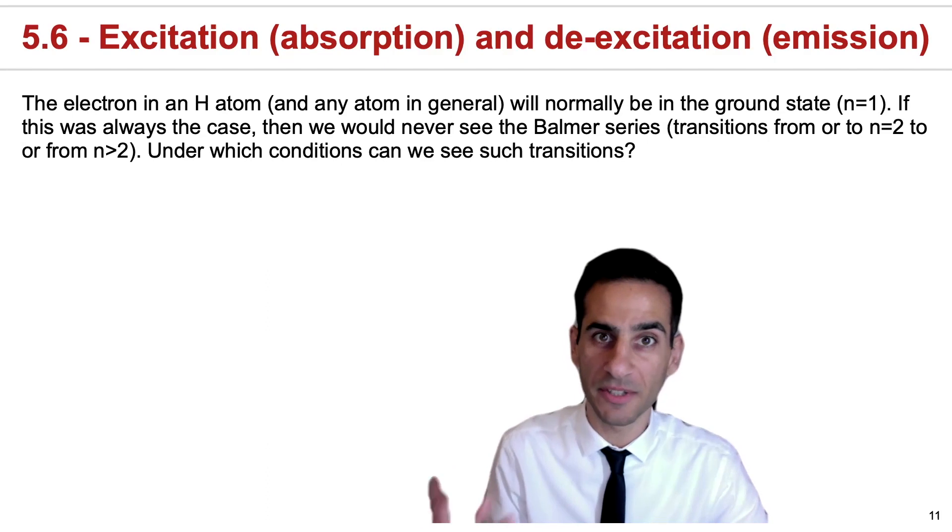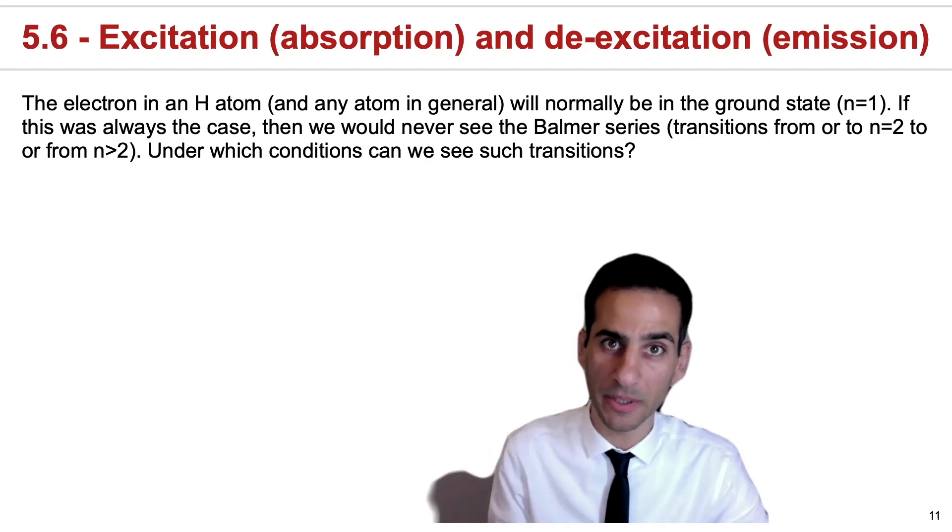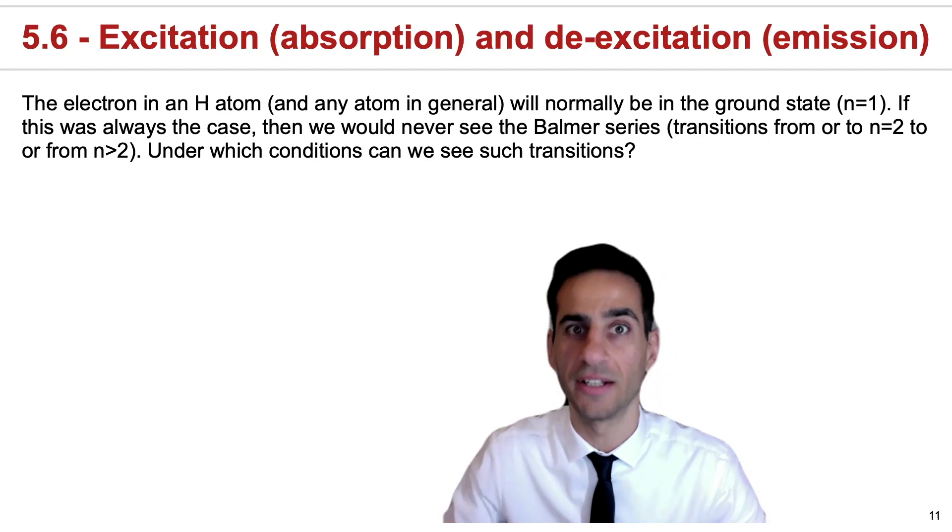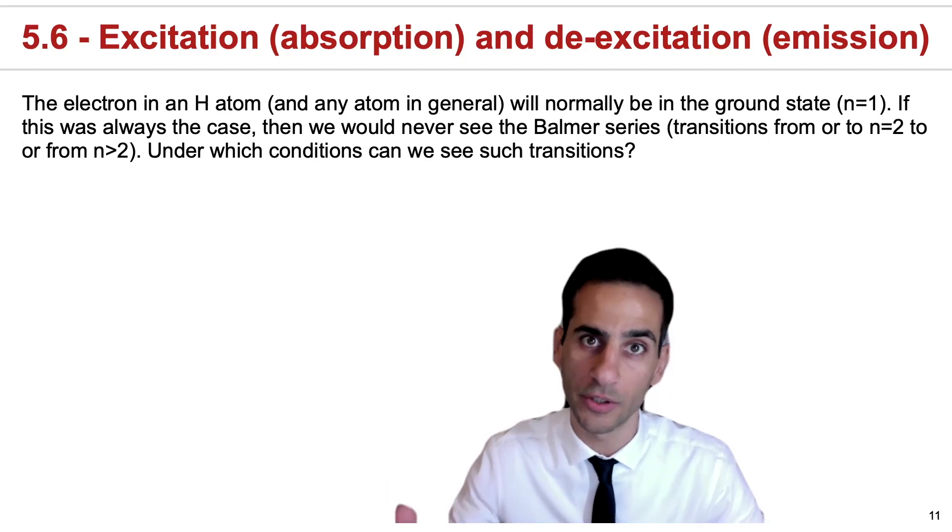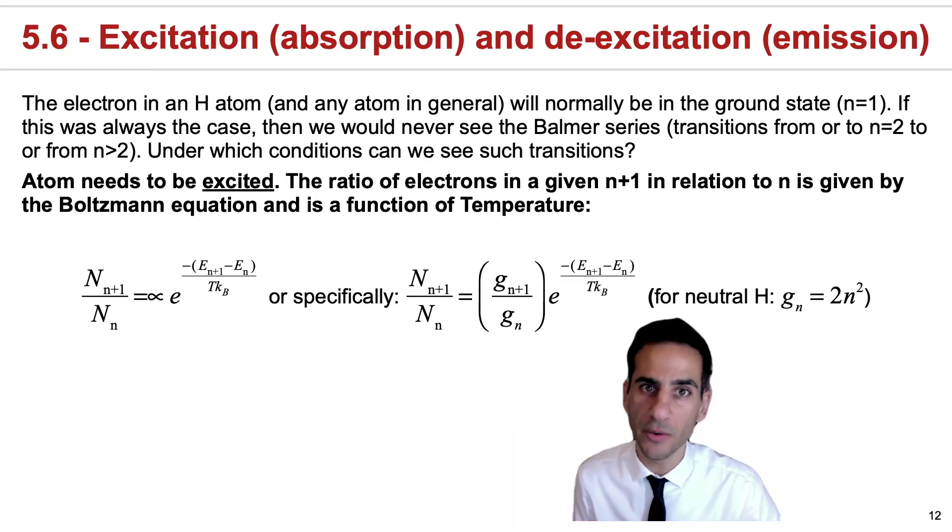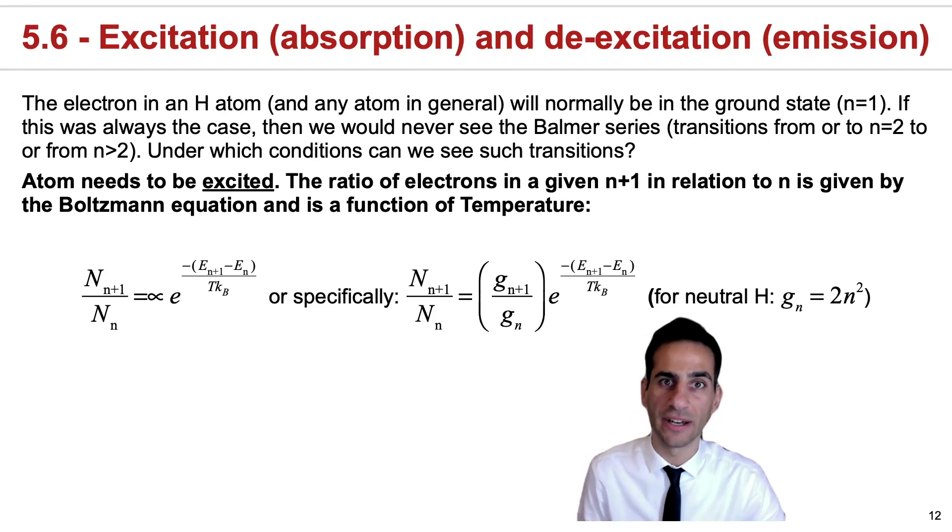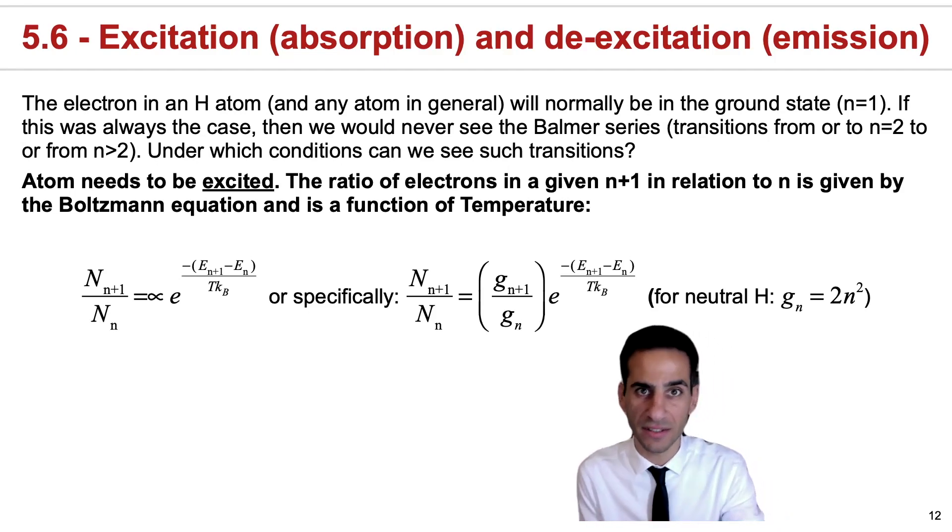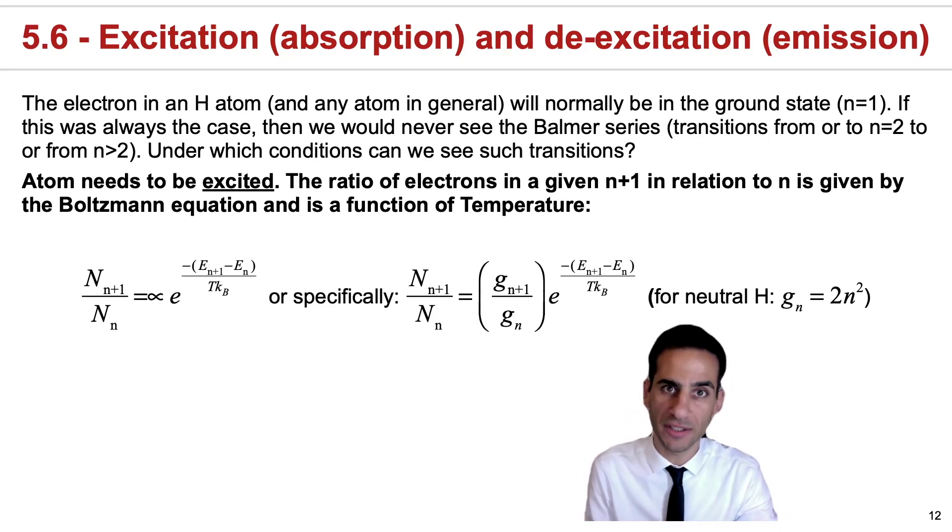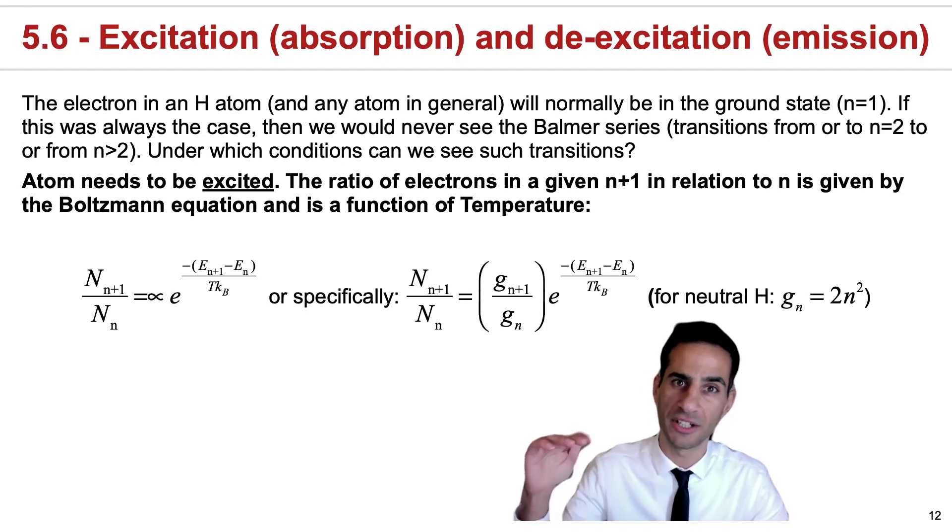This means that atoms can be excited by absorbing specific photons or de-excited by emitting photons. Physically, the way that we can predict whether an atom, at least in a statistical sense, will have its electrons at some energy n plus 1 versus some energy level n is through the Boltzmann equation.